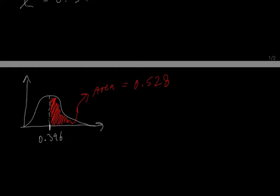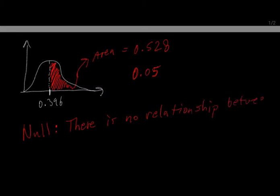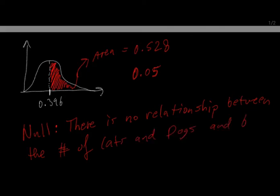If this area was below 0.05, we would be able to reject the null hypothesis. And the null hypothesis, in this case, is that there is no relationship between the number of cats and dogs and being at a park or in a house. So, that's the null hypothesis.